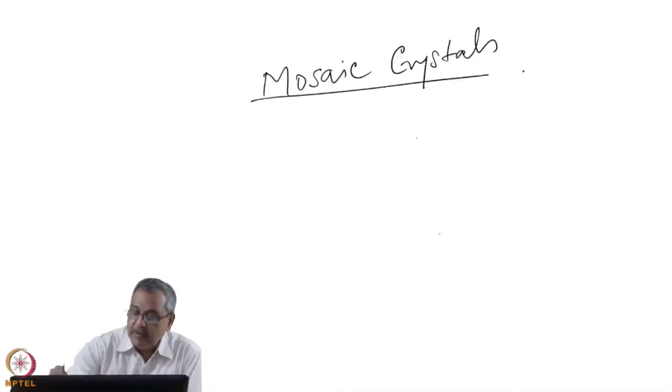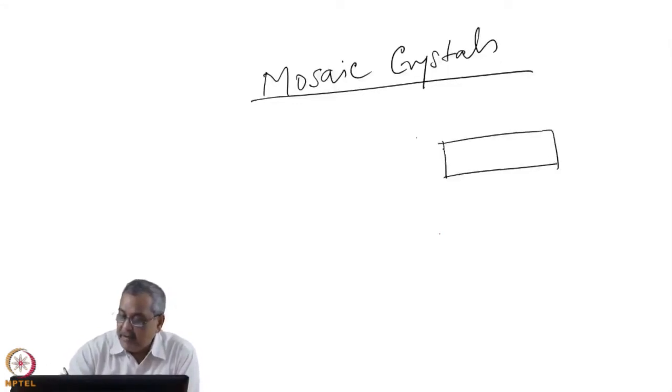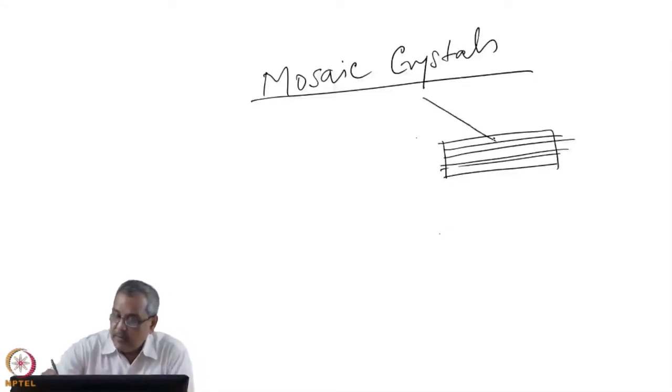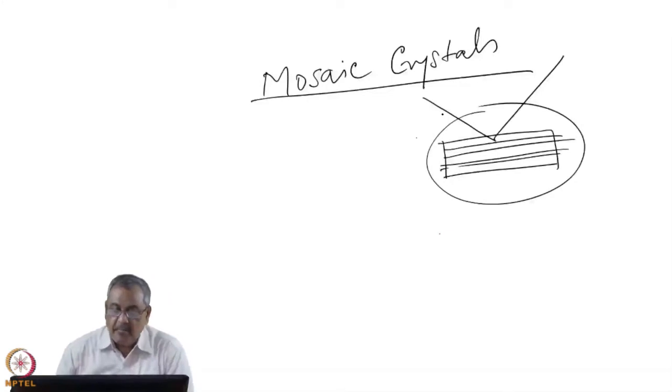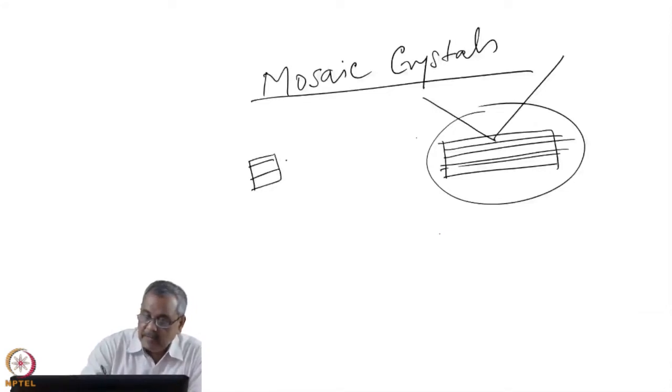What does a mosaic crystal do? Instead of the usual textbook description where you do Bragg's law with planes and write 2d sin θ equal to nλ assuming a perfect single crystal, in reality this crystal is pressed or strained in a way that it consists of small crystallites.